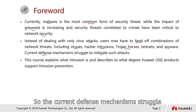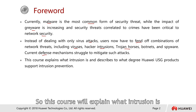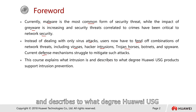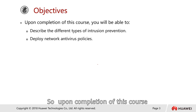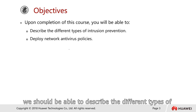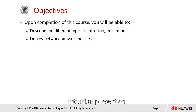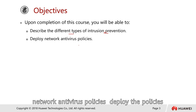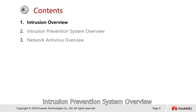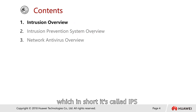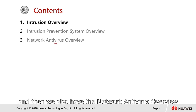The current defense mechanisms struggle to mitigate such attacks. This course will explain what intrusion is and describe to what degree the Huawei USG firewall product supports intrusion prevention. Upon completion, we should be able to describe the different types of intrusion prevention, understand network antivirus policy, and deploy that policy. The course is broken into three topics: intrusion overview, intrusion prevention system (IPS) overview, and network antivirus overview.